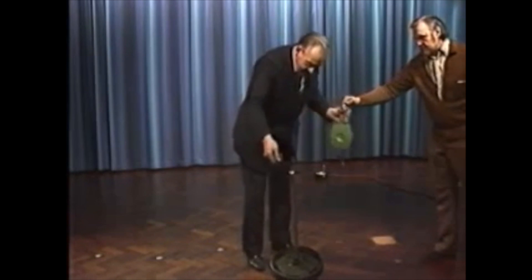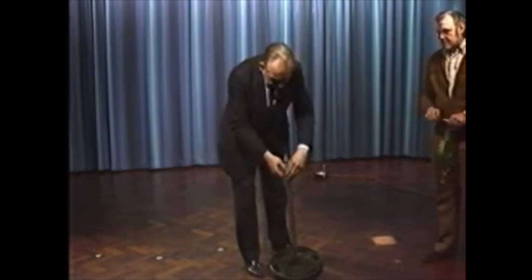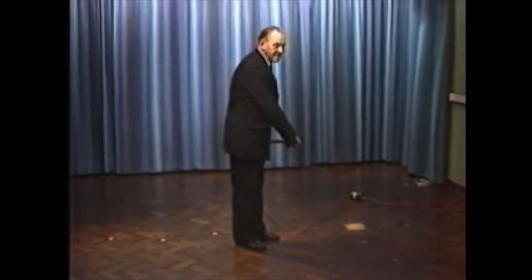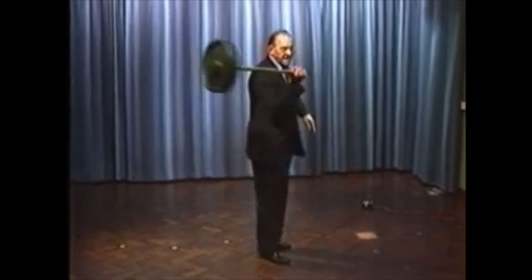So now we'll spin it up to two and a half thousand revs a minute, at which point it becomes a live thing. So here goes, 40 pounds of wheel as light as a feather. This is not a conjuring trick, this is a fact of science.